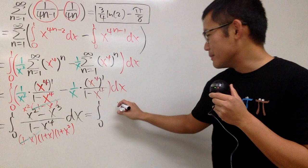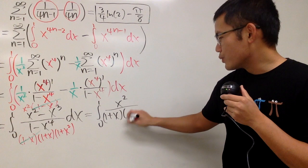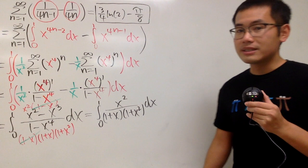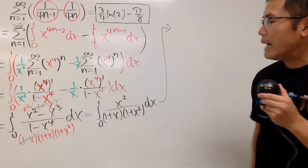And we can factor this a little bit. We get 1 minus x times 1 plus x times 1 plus x squared. On the top we can factor out an x squared, and then we have 1 minus x. The best part is that the 1 minus x cancels. This is like a question I could totally put on a calculus 2 final exam and see the partial fraction work from students.